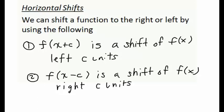Next let's talk about horizontal shifts and horizontal stretches. Beginning with horizontal shifts: f(x + c) is a shift of the original function f(x) to the left c units. Make special note here because horizontal shifts and stretches tend to do the opposite of what our brain wants us to think. Even though we are adding c and we expect this to move in a positive direction or to the right, it actually shifts f(x) to the left. Similarly, f(x - c) is a shift of our original function f(x) to the right c units.